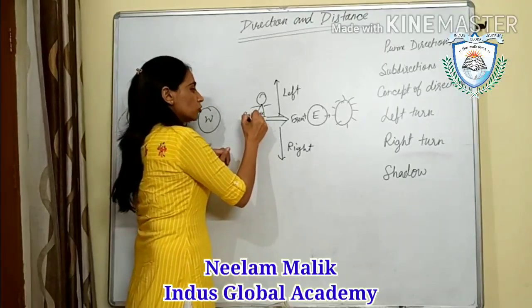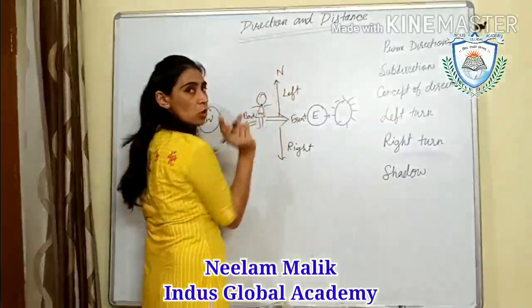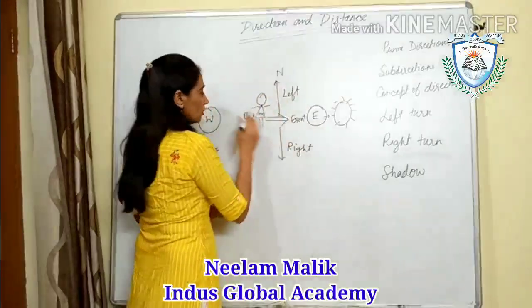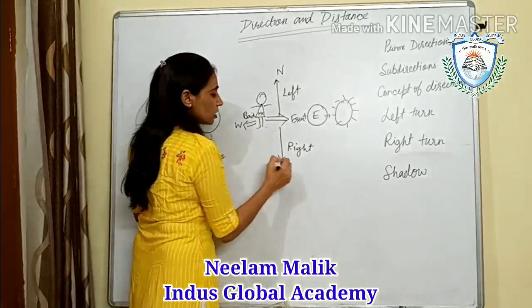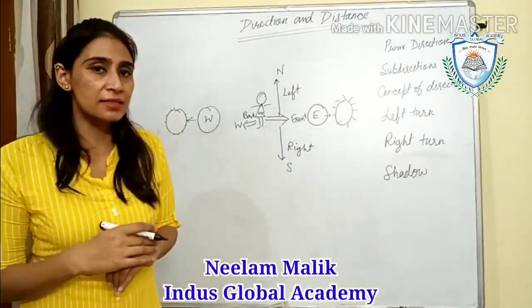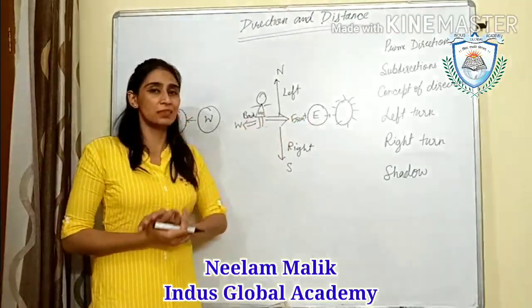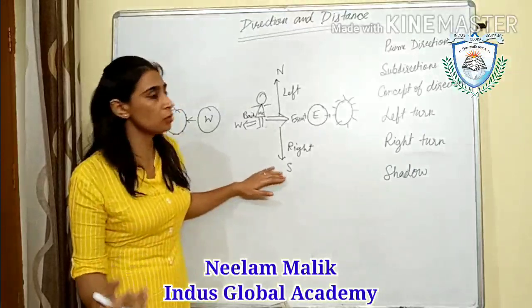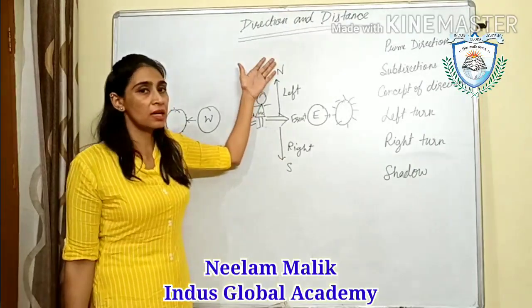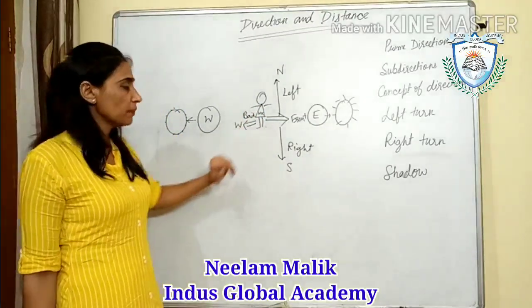So when you are facing sun rises, your front is east, your right is south, your left is north, and your back is west.